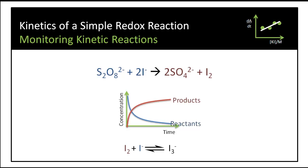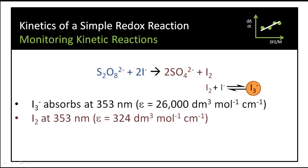What we'll do is measure the triiodide ion over the initial period of the reaction while the concentration of iodine is low, and use that as a way of estimating the rate of formation of products. We can use UV-visible spectroscopy because triiodide absorbs very strongly at 353 nanometers, whereas iodine doesn't.